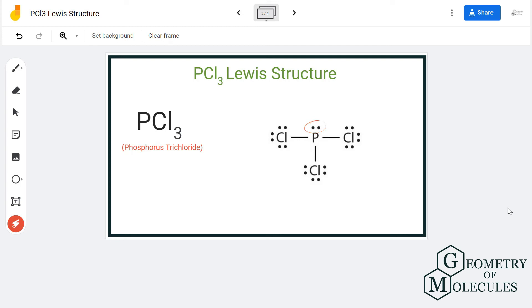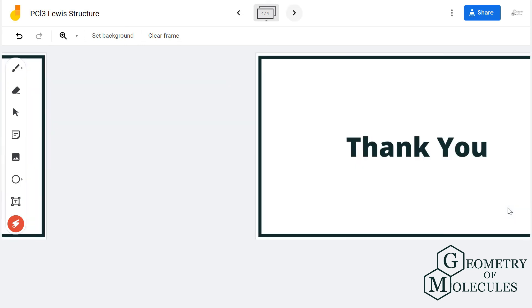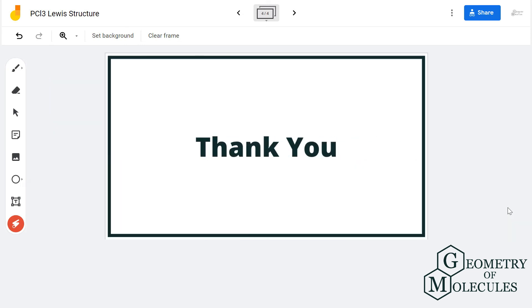Although there is one lone pair of electrons on the phosphorus atom which does not participate in any bond formation, this is the Lewis structure for PCl3. For more videos on Lewis structure, polarity, and molecular geometry of molecules, subscribe to our channel. Thank you for watching.